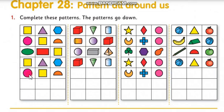Then we have in our next row a purple circle, a yellow square, and a red semicircle. So what we're going to do now is look back over what we have and see if at any point this starts to repeat. We have our yellow square, our purple triangle, and then our blue hexagon. Let's look down and see if that appears anywhere else.